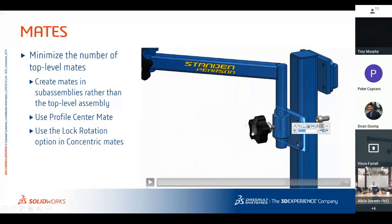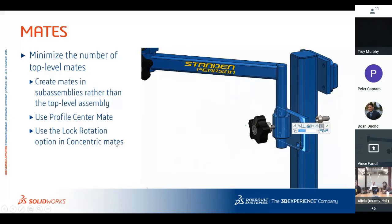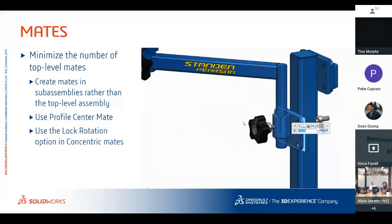Another tip is to use the lock rotation option in concentric mates. When you bring in a concentric mate — like a screw into a hole — you lock it so it can't rotate. It doesn't add an extra mate, but it keeps SolidWorks from having to solve that extra degree of freedom of rotation.